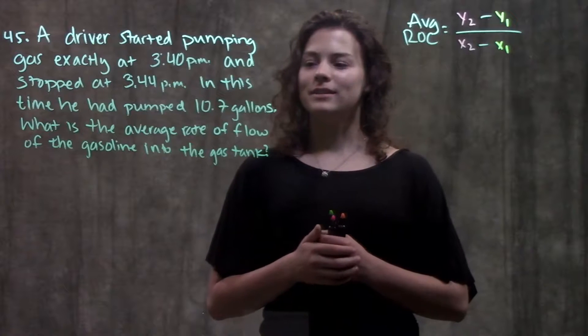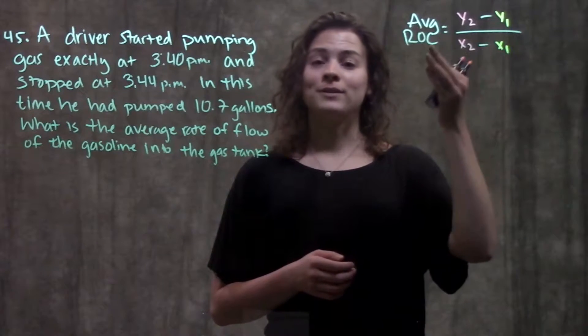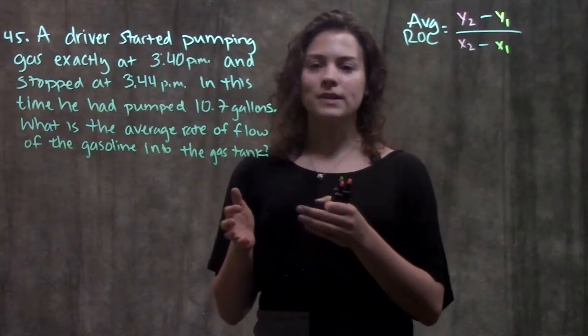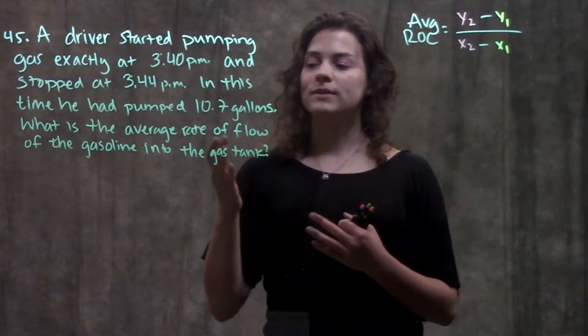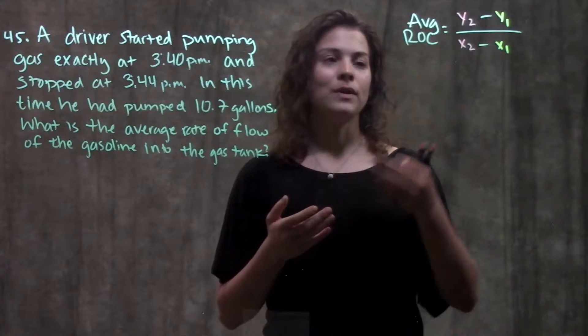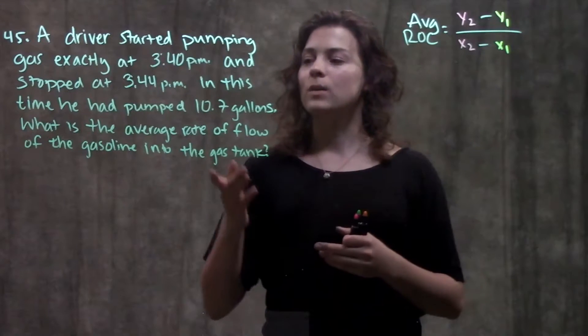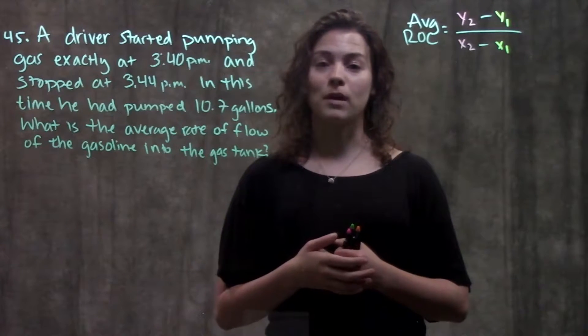So remember, average rate of change, we find that by finding the difference in our y's over the difference in the x's. What makes it difficult with word problems, though, is that we have all this information, and we need to figure out what they're telling us, what these values represent. Because we know that in order to find that rate of change, we'll need some set of x and y values. We just need to determine what our x and y values are in terms of the word problem that we have.